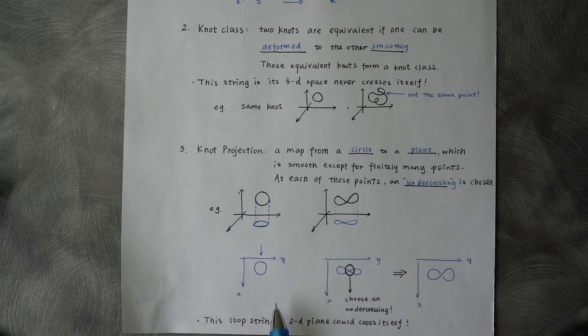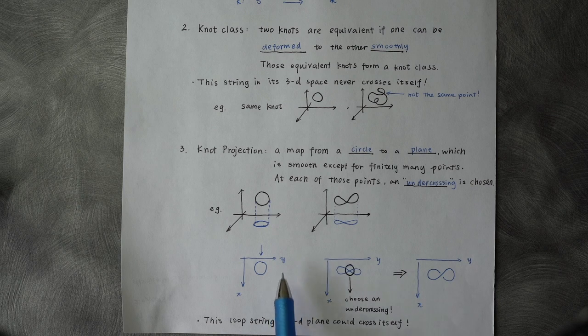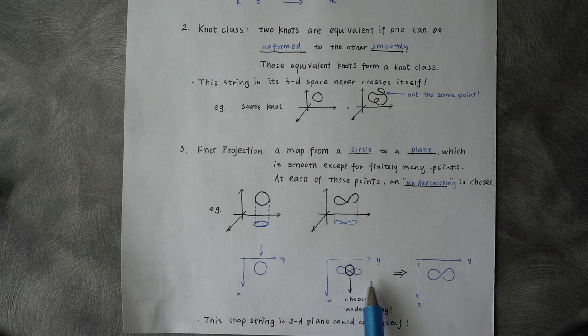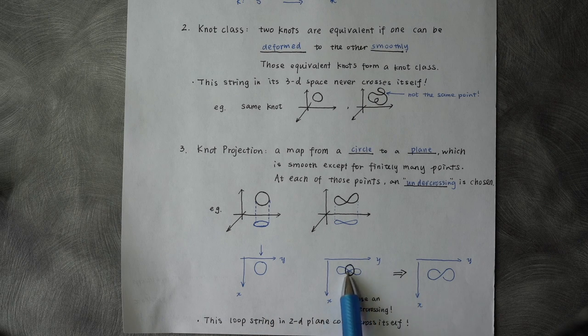For the first example, we get a circle projection here. So every point is smooth here. But for the second one, we get an infinite symbol. Here is a crossing.